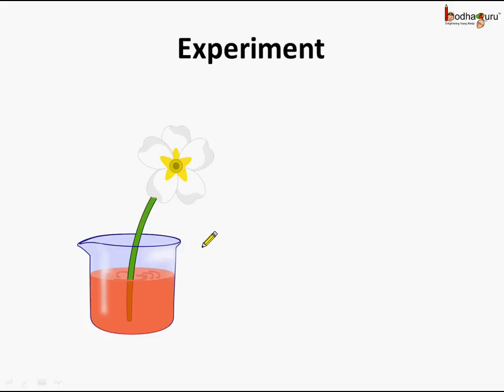Now we place this branch in a beaker filled with water. As you can see, the water is red in color — this is due to the red ink drops added to the water.